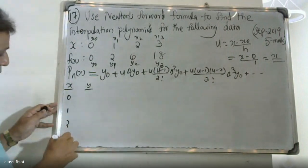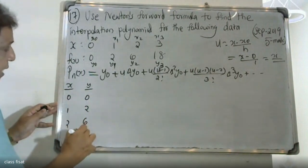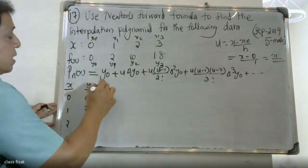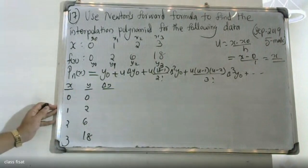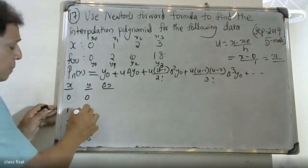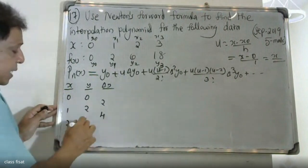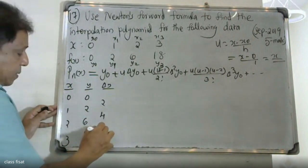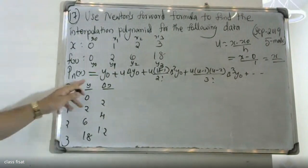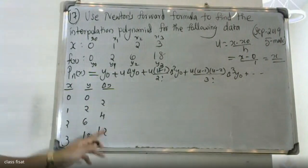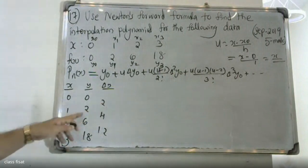0, 1, 2, 3, y column 0, 2, 6, then the third column equals delta y value, delta square value, delta square value.